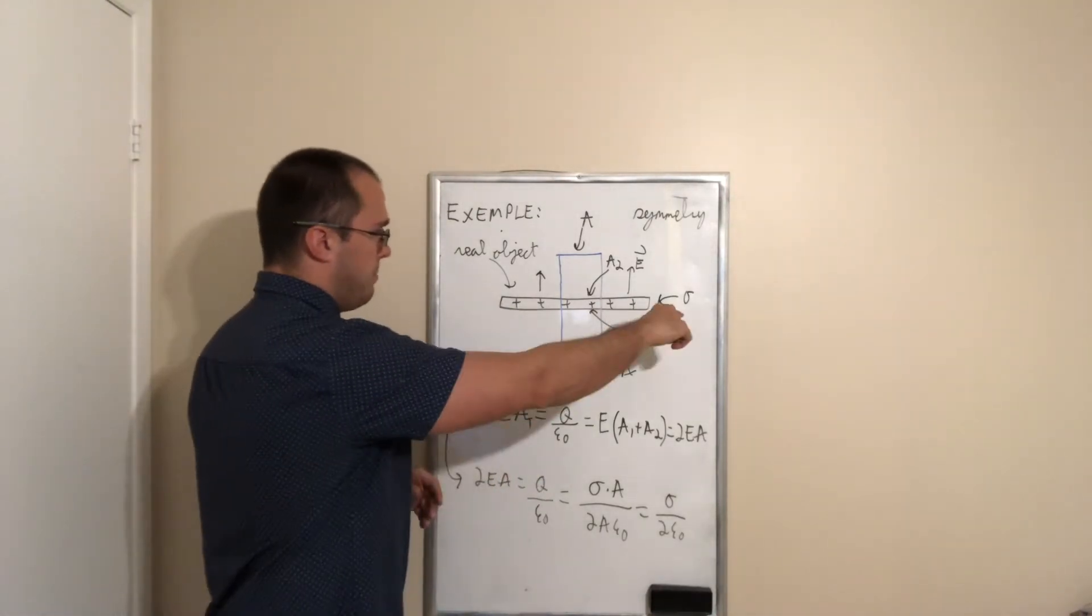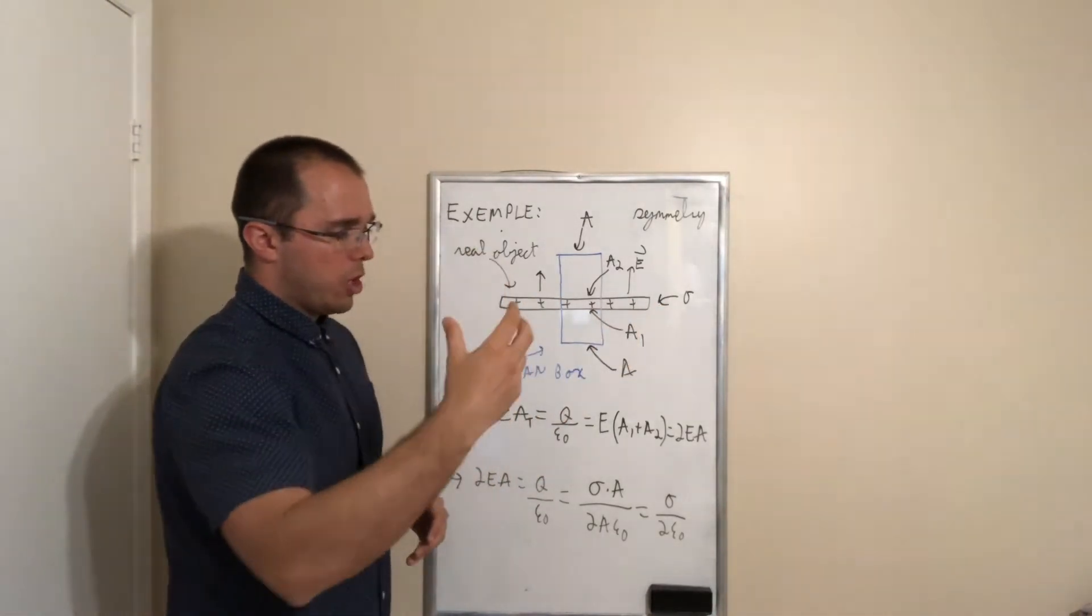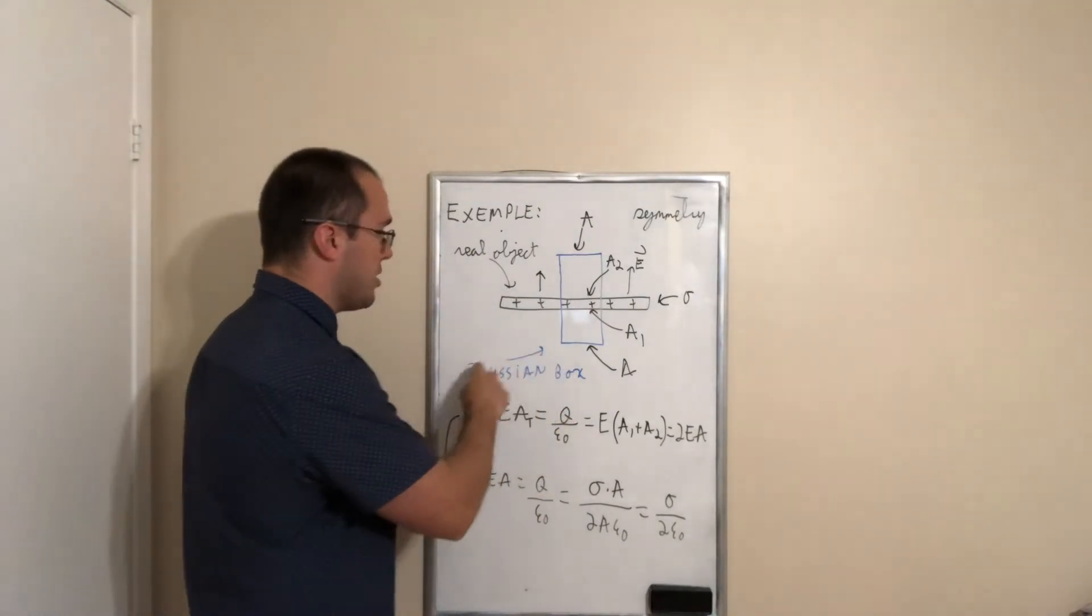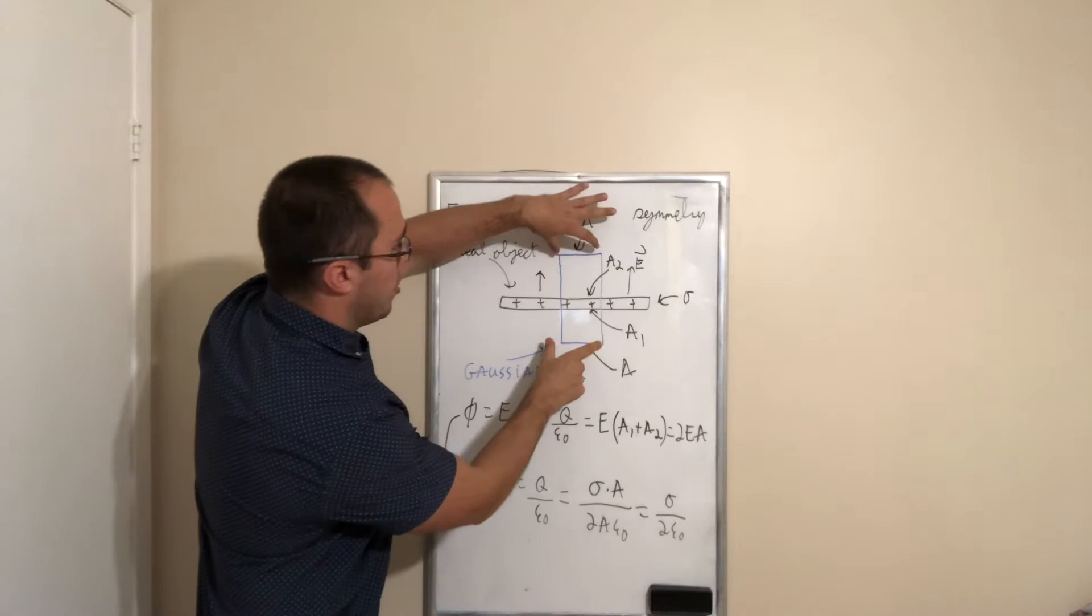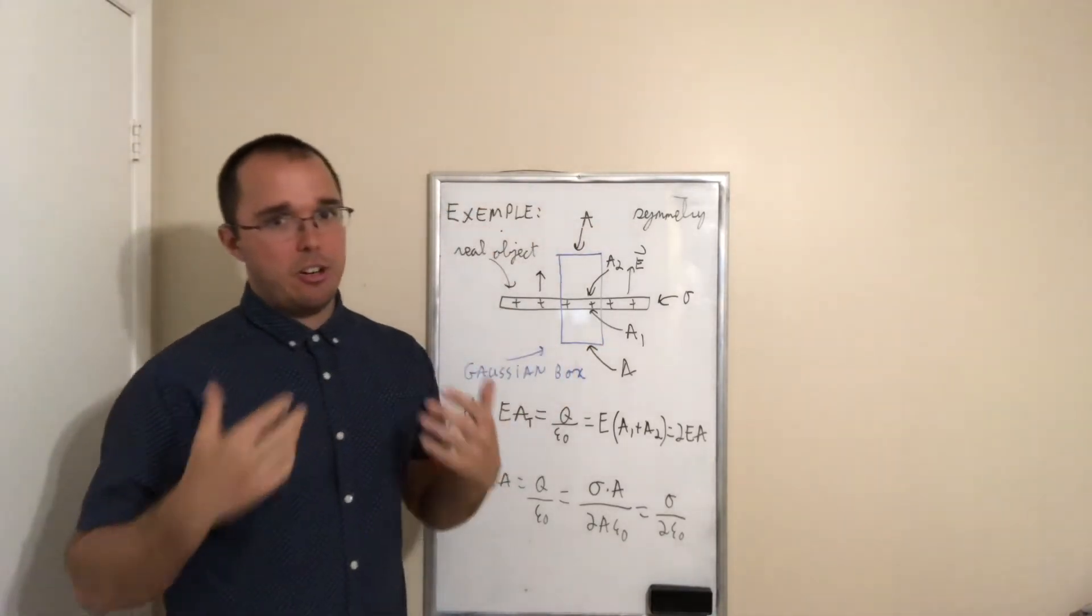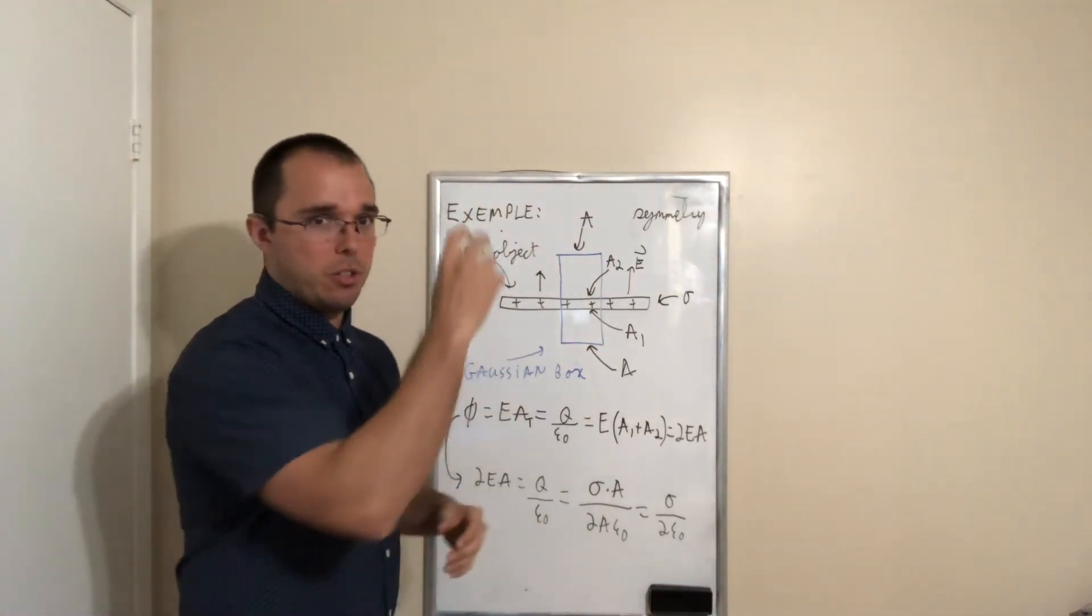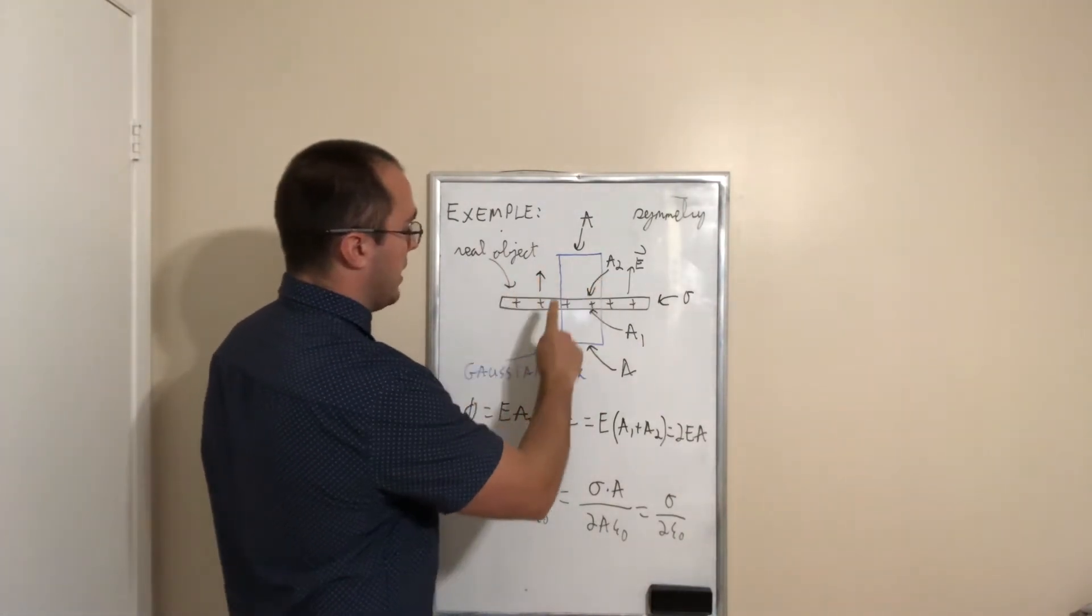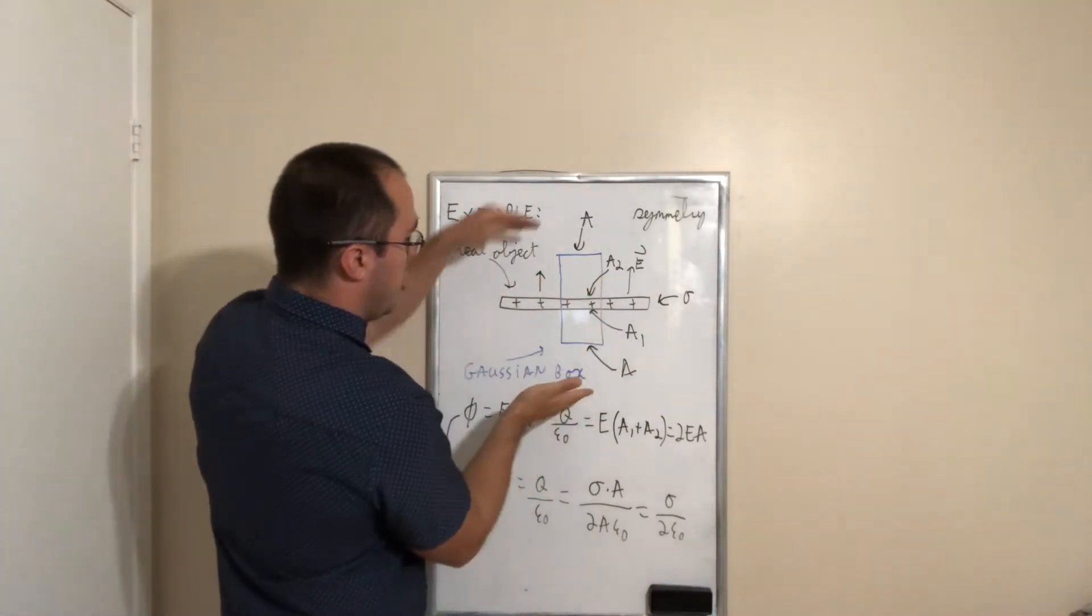So we have a charge plane. We construct a Gaussian surface. In this case, it is a box. It is a Gaussian box, a rectangular box. Now, again, it is hard to draw a 3D surface on a 2D board, so you can imagine that this is a prism, basically, and there's four sides on the side and the two top sides.